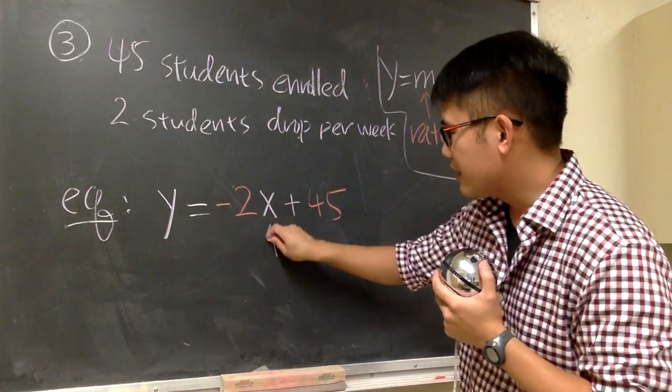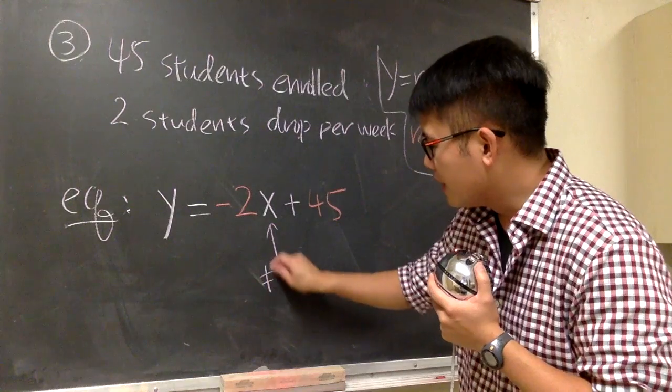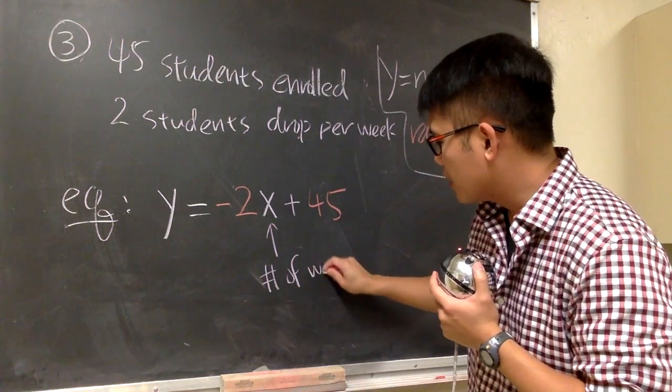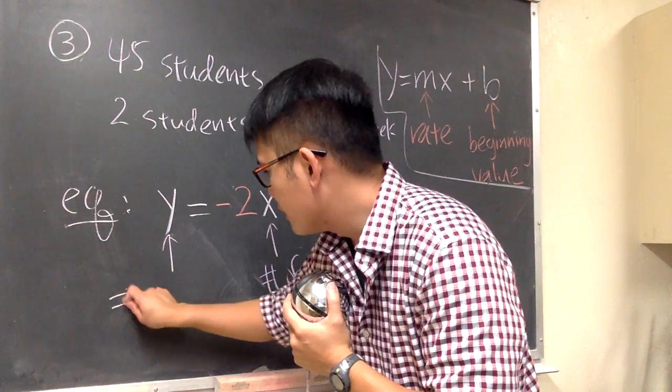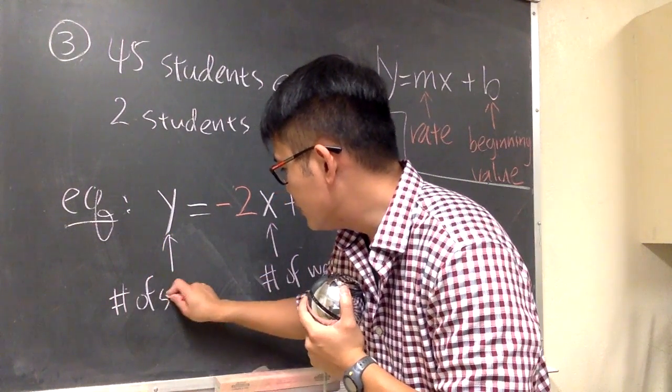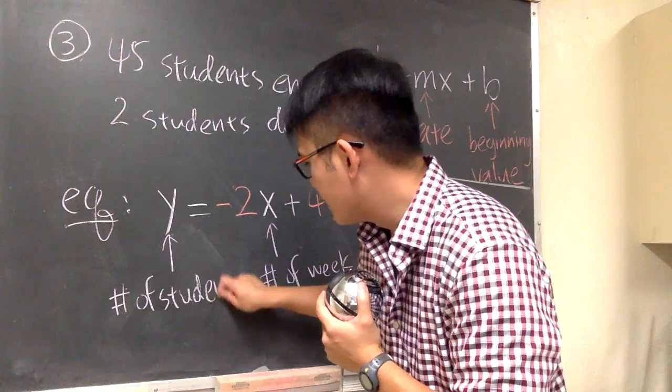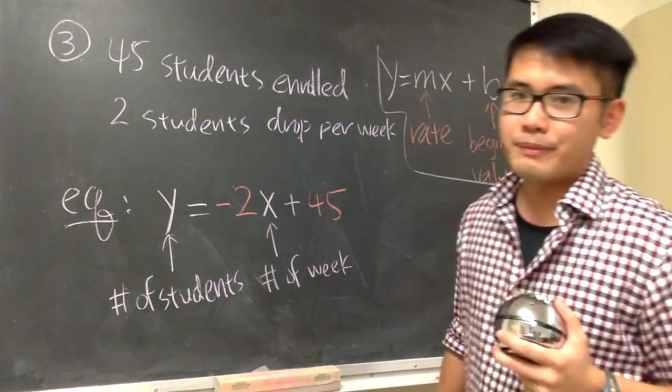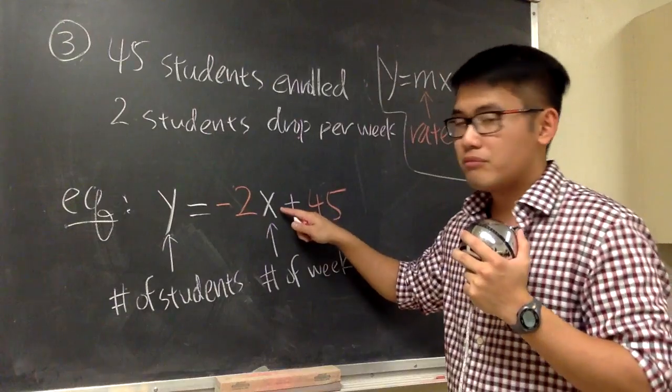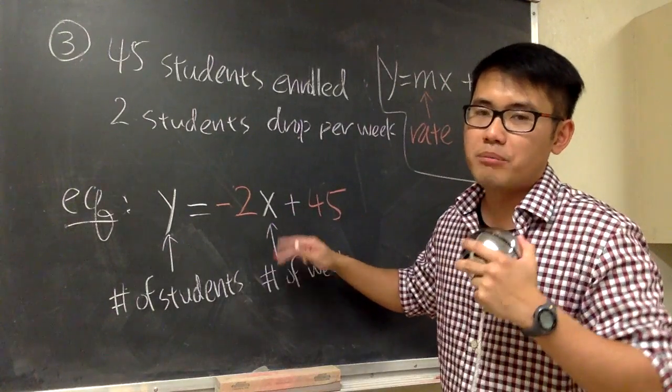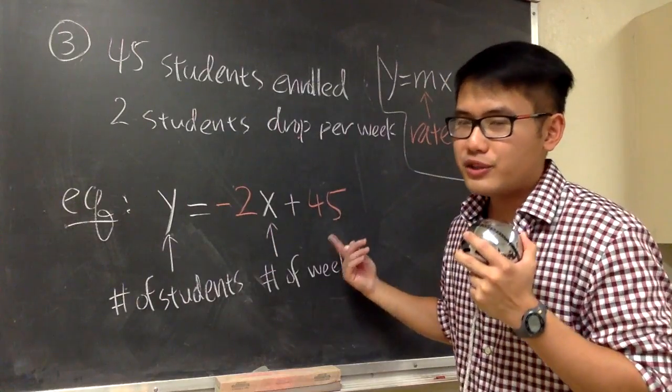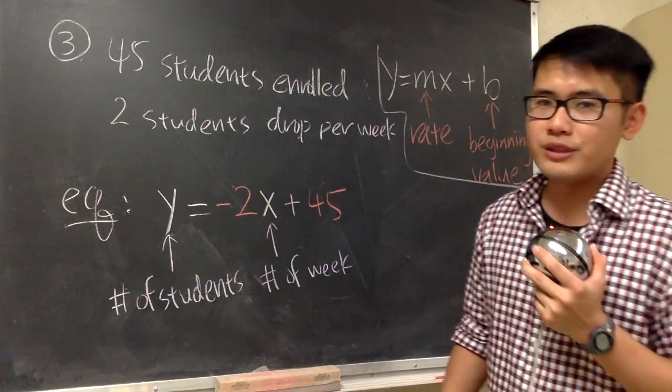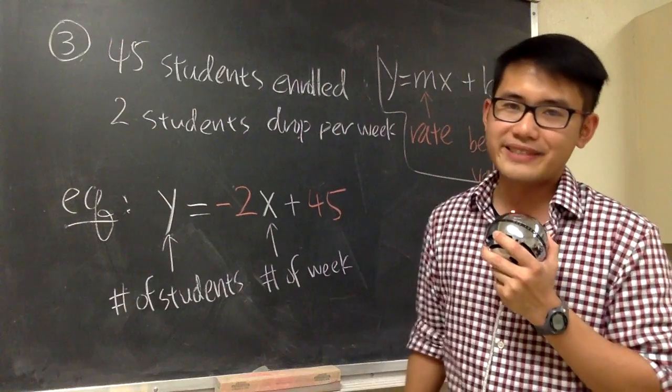In this case here, let me write it down, x will stand for the number of the week, right? And y will stand for the number of the students that you still have in the class. If you want to figure out how many students that we have, then just plug in that number of week. Maybe after 7 weeks, then you plug in 7 right here and then you just do the computation and you can figure out how many students you still have left in the class. That's it.